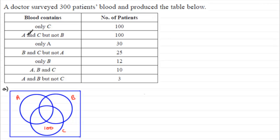And then we've got A and C but not B. 100 patients have substance A and C but not B. Well A and C would be these two regions here, but we're talking about the region that's not in B. So it's got to be just this region here. So there's 100 patients for that one. Let's just tick these off as we go down.